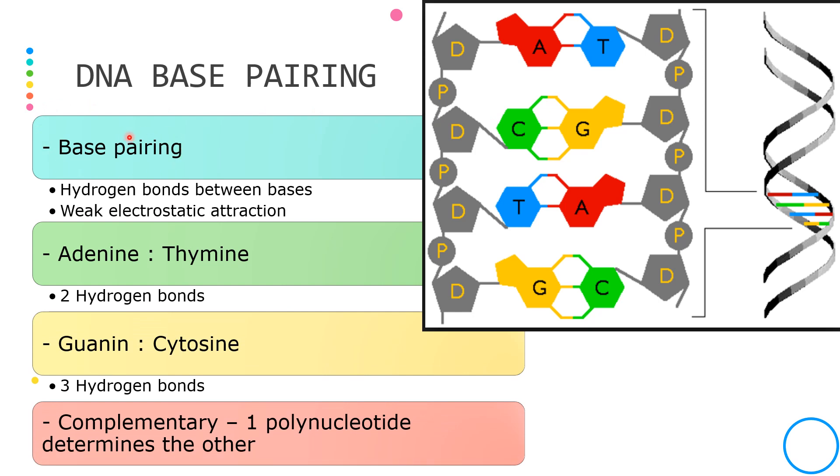This involves the formation of hydrogen bonds in between adenine and thymine and cytosine and guanine. Hydrogen bond is a weak electrostatic attraction.